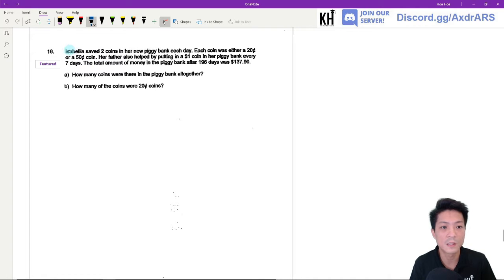Question 16. Isabella saved two coins in her piggy bank each day. Each coin was either a 20 cent or a 50 cent coin. Her father also helped by putting a one dollar coin in her piggy bank every seven days. The total amount of money in the piggy bank after 196 days was $137.90. Part A: How many coins were there in the piggy bank altogether?